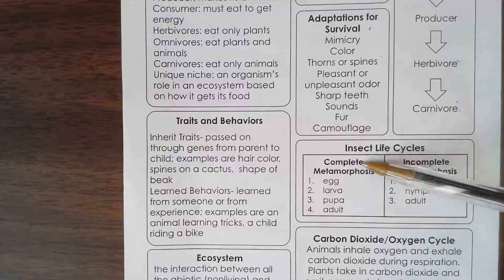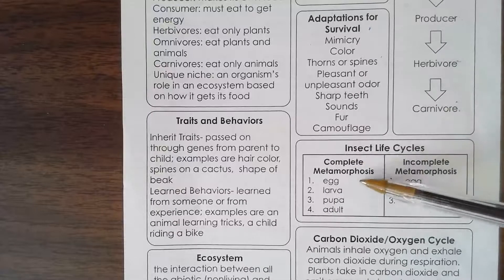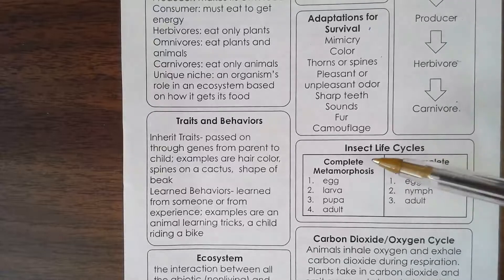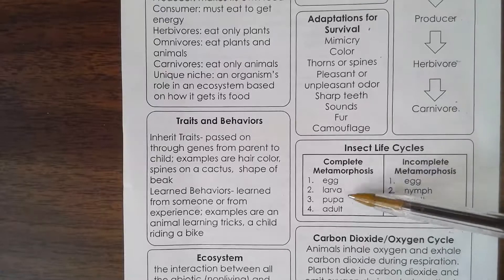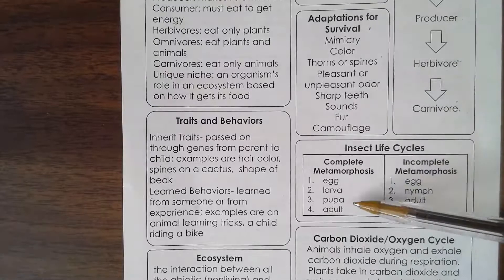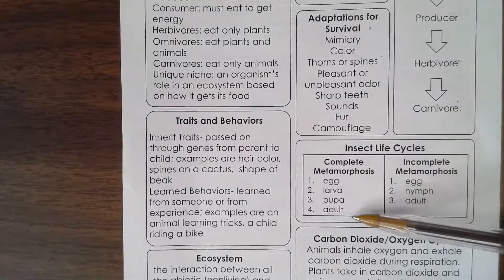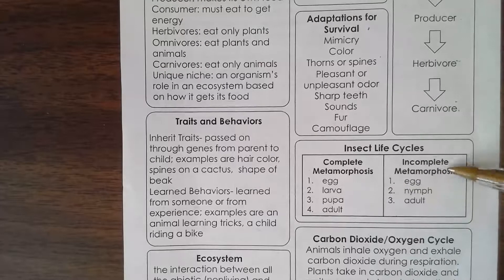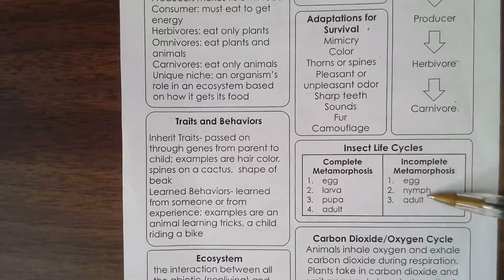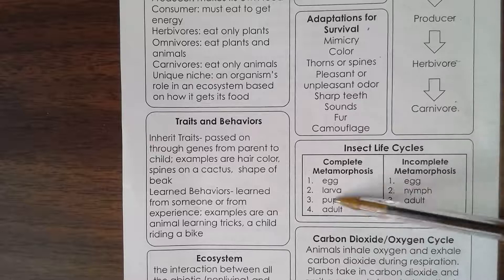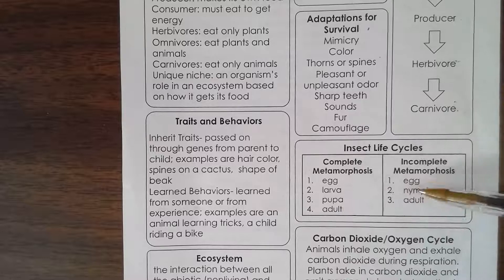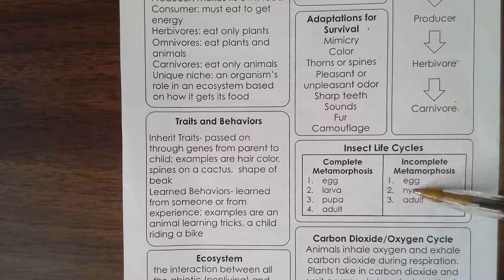Insect life cycles. For complete metamorphosis, you have the egg, the larva, the pupa, and the adult. Incomplete metamorphosis is just the egg, nymph, and adult — they're missing a stage.